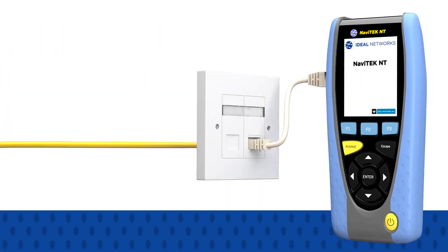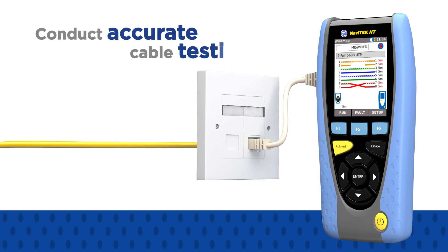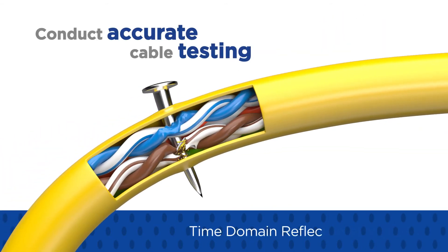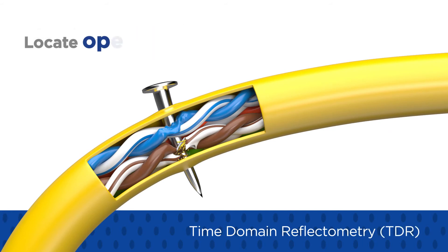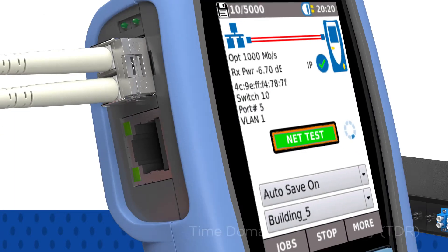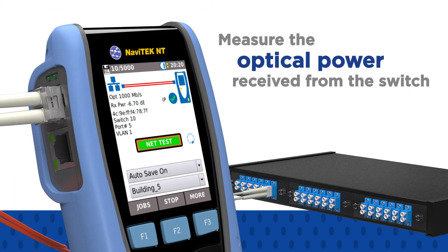Navitec NT can also be used to conduct accurate cable testing. For copper cabling, timed domain reflectometry, or TDR, is used to locate common wiring faults such as open and short circuits. For fibre optic cabling, Navitec NT shows the optical power received from the switch.